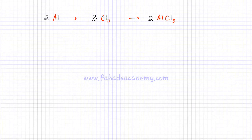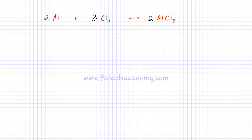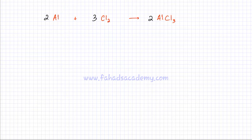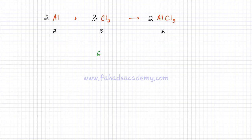In this example, aluminium is a metal reacting with chlorine to produce AlCl₃ (aluminium chloride). This is a balanced equation. The balanced equation states that two aluminiums react with three molecules of chlorine, producing two molecules of AlCl₃. So the ratio is 2:3:2. That's the simplest ratio. Now, what if I had 6.68 moles of chlorine?